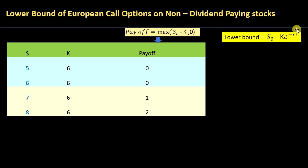We can also prove the lower bound of an American call option on a non-dividend paying stock would be the same — that will be discussed in another video. Go through this video again if you need to understand the basics. If you have any questions, post them in the comment section, and if the video was useful, please like and subscribe to our channel.